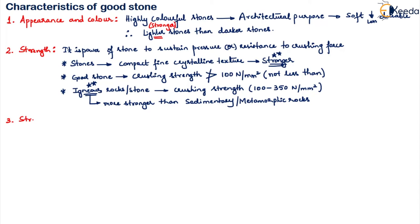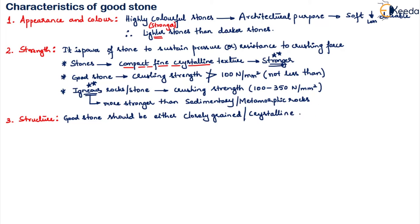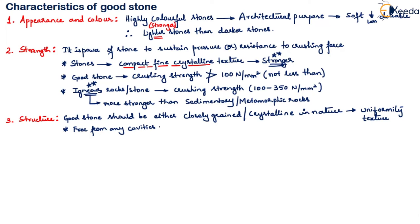The third property is structure. A stone which has compact, fine and crystalline texture is stronger. A good stone should be either closely grained or crystalline in nature, have a uniform texture throughout its formation, and be free from any cavities — which are gaps or holes — and free from cracks.